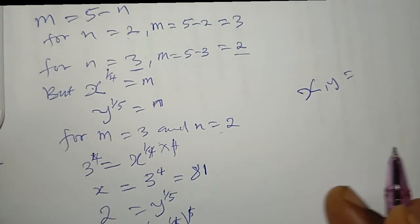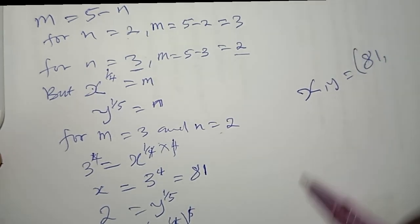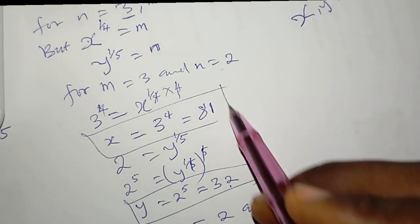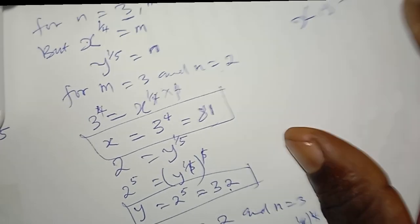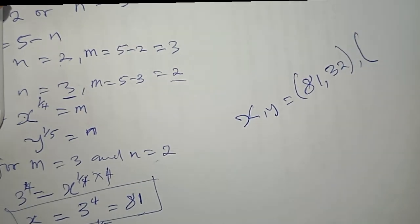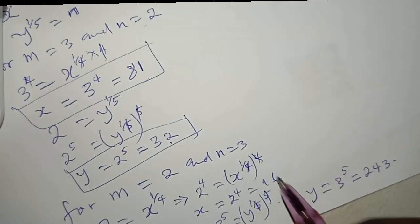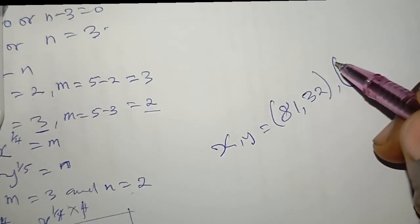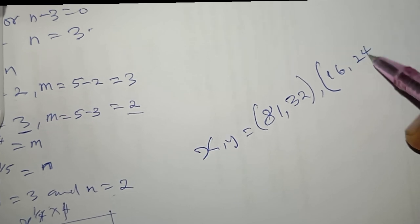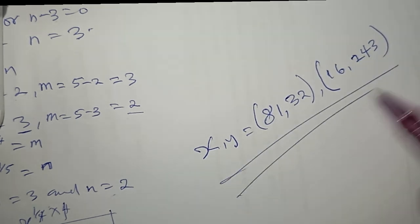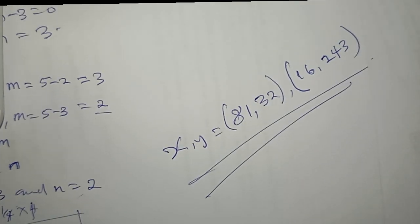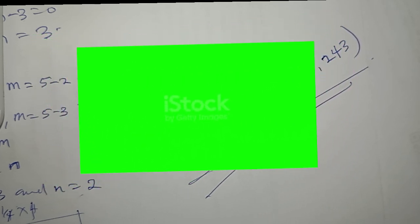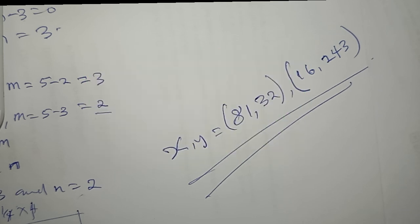Putting everything together, the solutions (x, y) are: (81, 32) and (16, 243). These are the values of x and y that satisfy the system. If you've understood the solution, hit the like button, drop any questions in the comments, and I'll get back to you. Thanks for watching — see you in the next video!